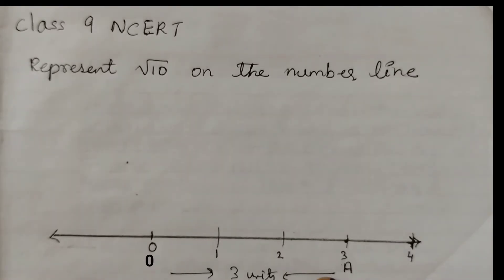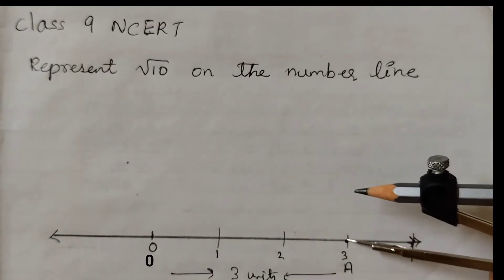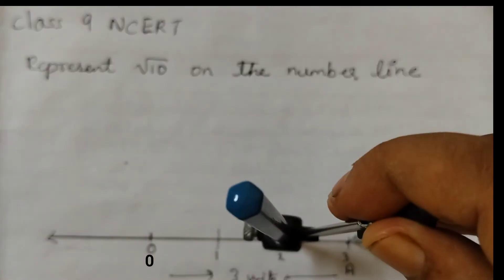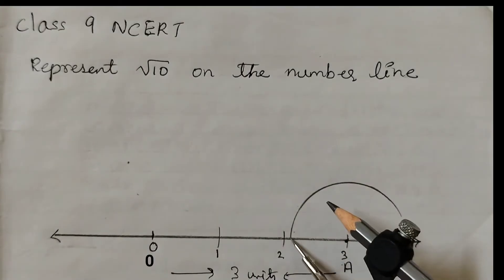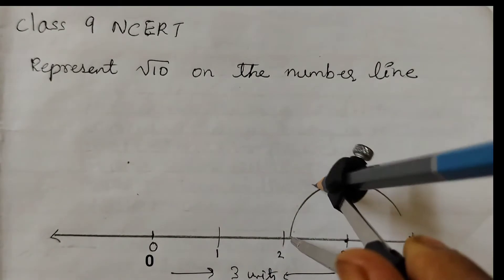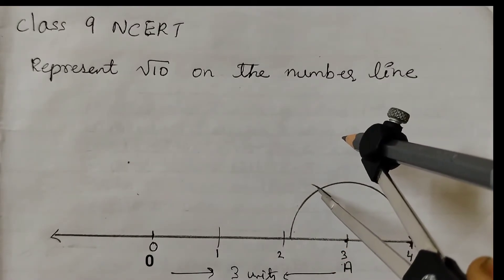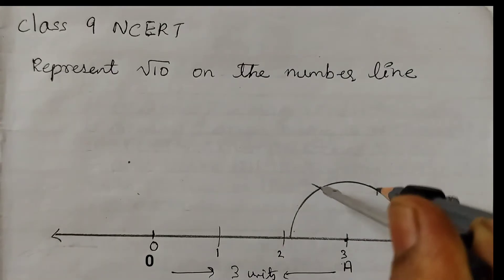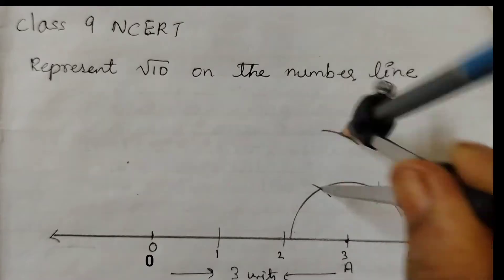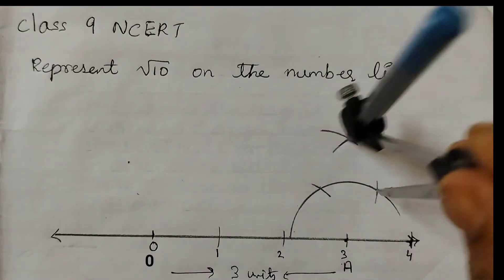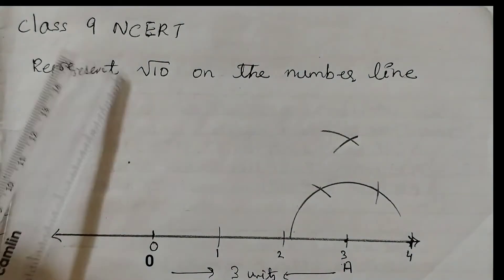At point A we will construct a perpendicular, so we will draw an arc like this. Now from this point, keep the metal point here, this is 60 degrees angle. And at this point you keep the metal point, this is 120 degrees, and here we put one more arc, so we will have two intersecting arcs here. Now join these two points. Now this is a 90 degrees angle.